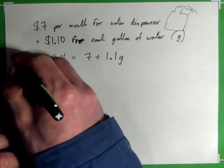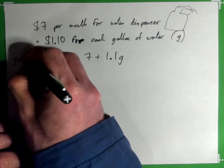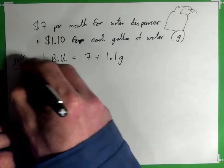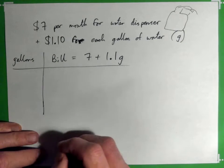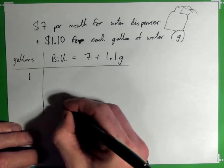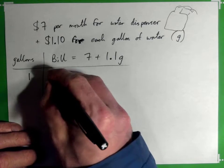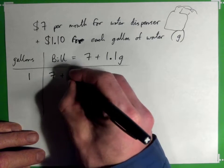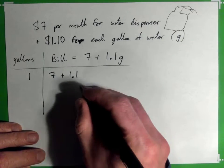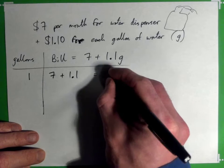I like to do a little table to help us understand: gallons of water and the bill. So what it means is, if you use one gallon of water, you'd have to pay for the dispenser and $1.10 for your gallon, and that would be $8.10. We okay with that? Does that make sense?